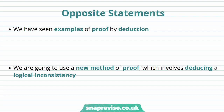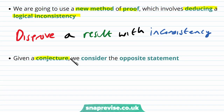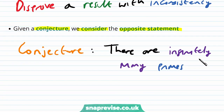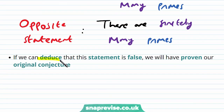So what exactly are opposite statements? We've seen examples of proof by deduction — we've been able to prove by deduction that the sum of two odd numbers is odd. We're going to use a new method of proof which involves deducing a logical inconsistency. We're going to be disproving certain results with inconsistencies. Given a conjecture, we start by considering the opposite statement. Consider the following conjecture: there are infinitely many primes. This is a statement we'd like to prove. The opposite statement in this case is that there are finitely many primes, as opposed to infinitely many. If we can deduce that this statement is false, we will have proven our original conjecture. So we wish to show that having finitely many primes is inconsistent.